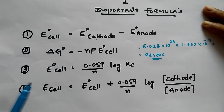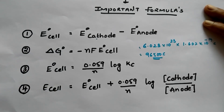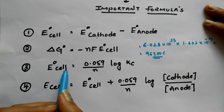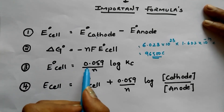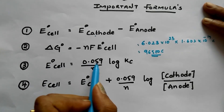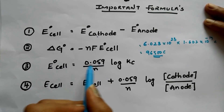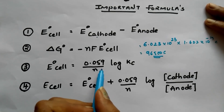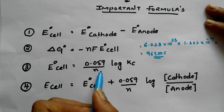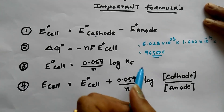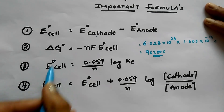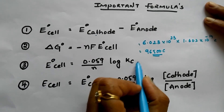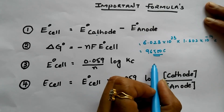For the third formula, E° cell and the constant 0.059 divided by N — where N is the number of electrons transferred — are used. Just substitute the values and you get the equilibrium constant Kc.